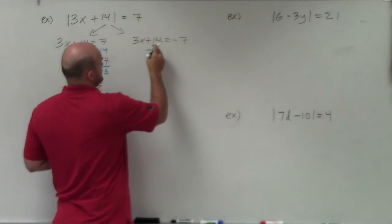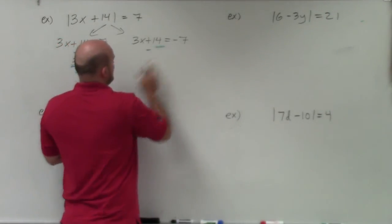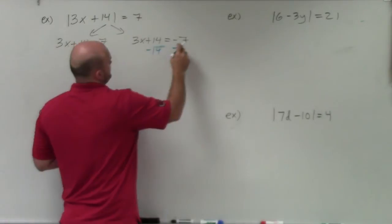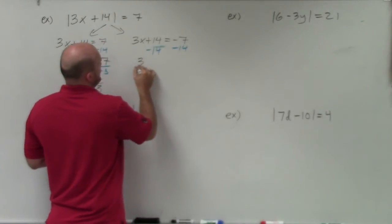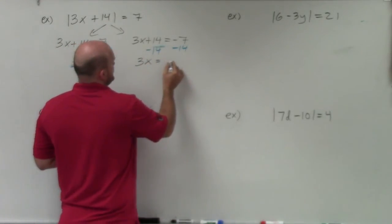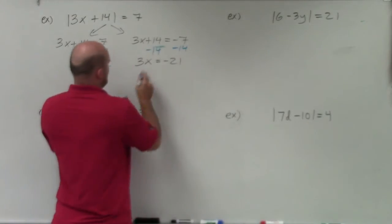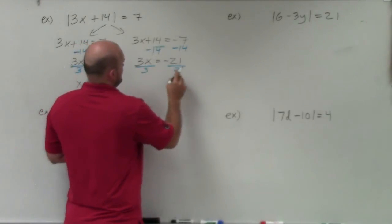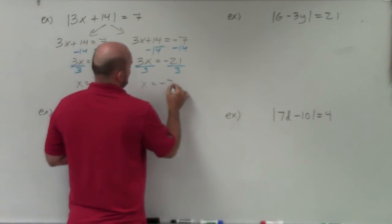Over here, we subtract from 7, so we subtract 14 on both sides. Therefore, I obtain 3x equals negative 21. Divide by 3, divide by 3. x equals negative 7.